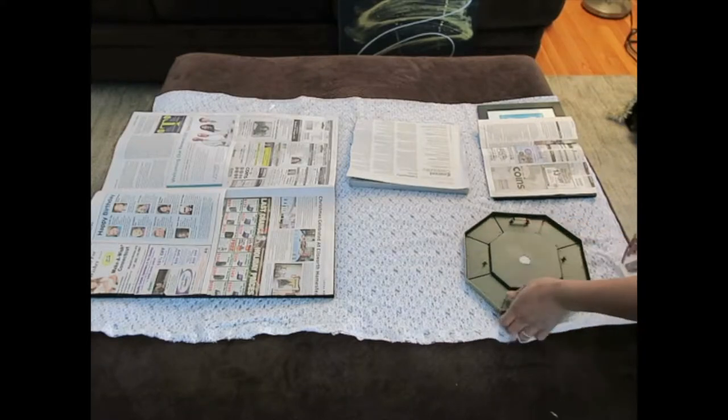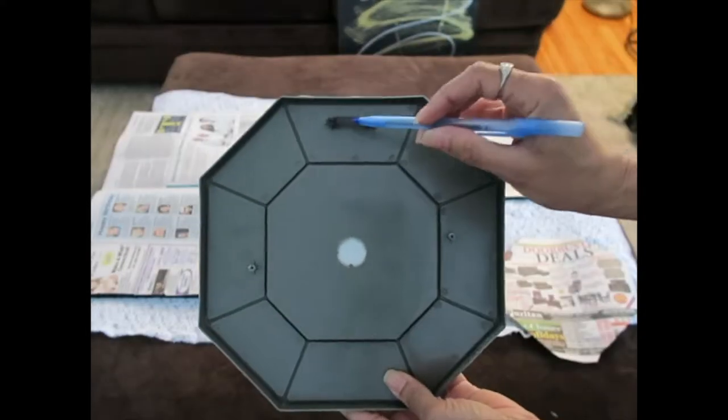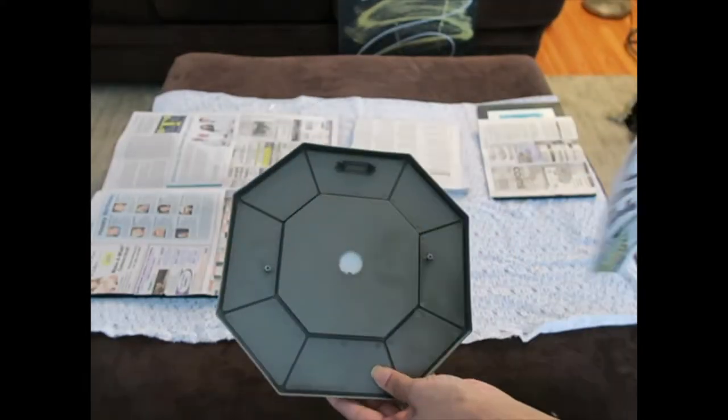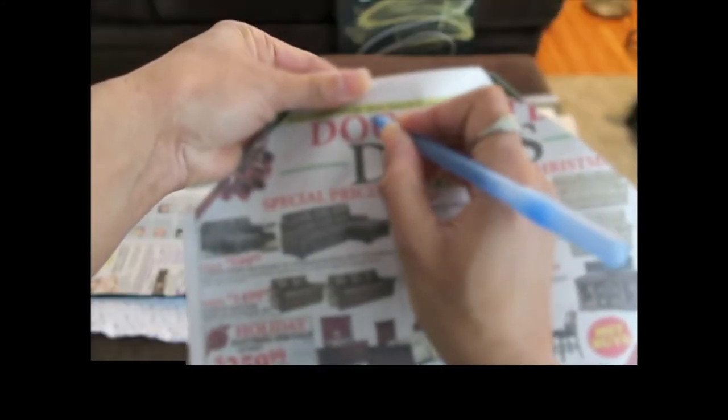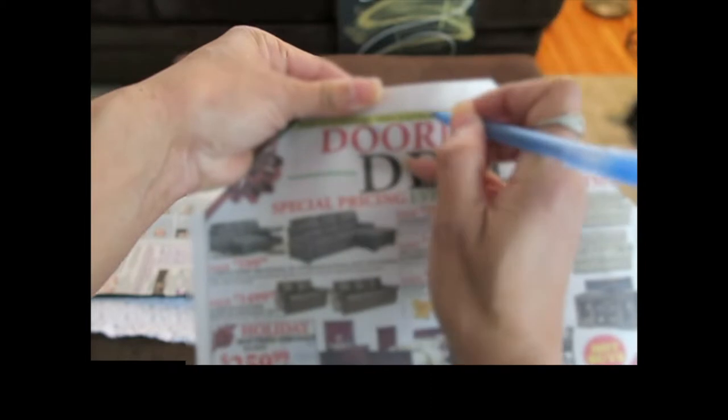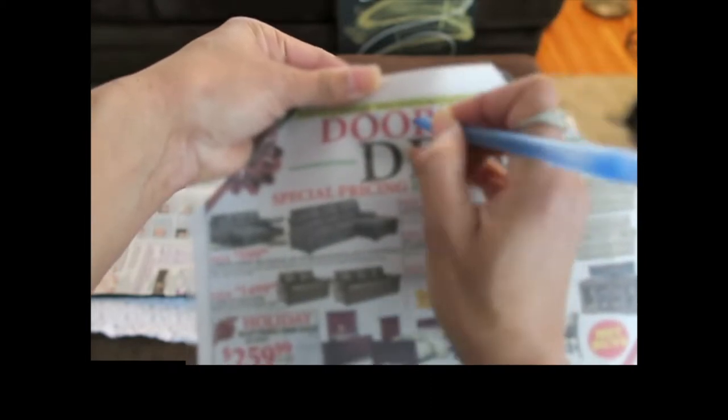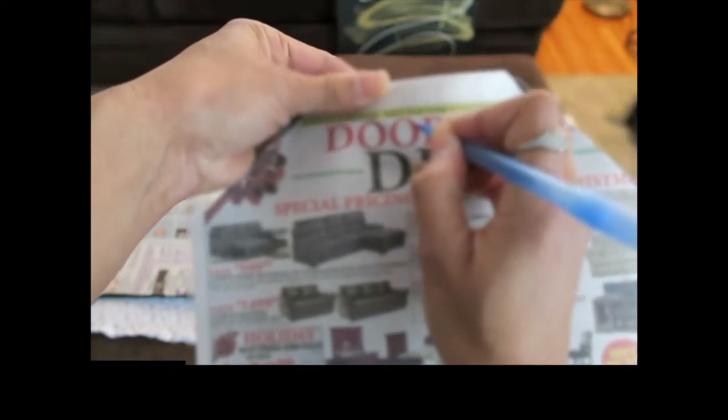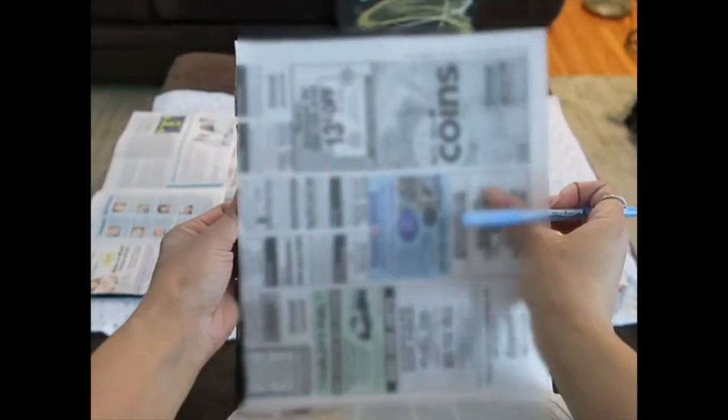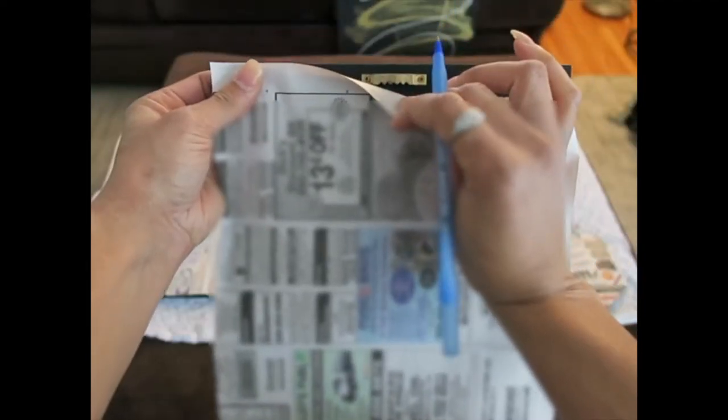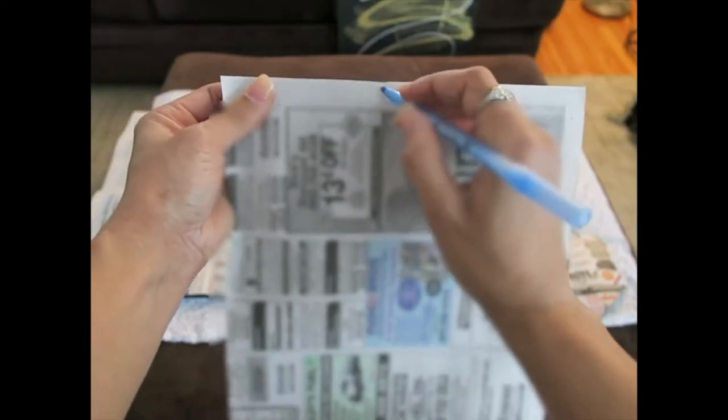Once you have all your templates created you want to line the paper up so that the bracket is in the exact spot on your template as it is on your item. Make a hole at the center of your bracket so you know exactly where to put your nail. Continue this process until you've done this for all the pieces that you're going to hang.